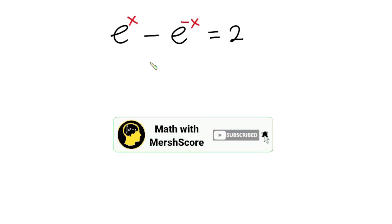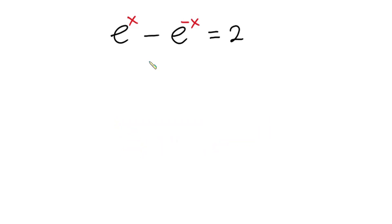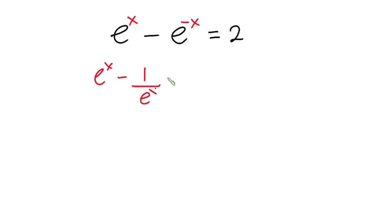Now let's get started. From the real world, this equation is the same as e to the power x minus 1 over e to the power x, and this is equal to 2.